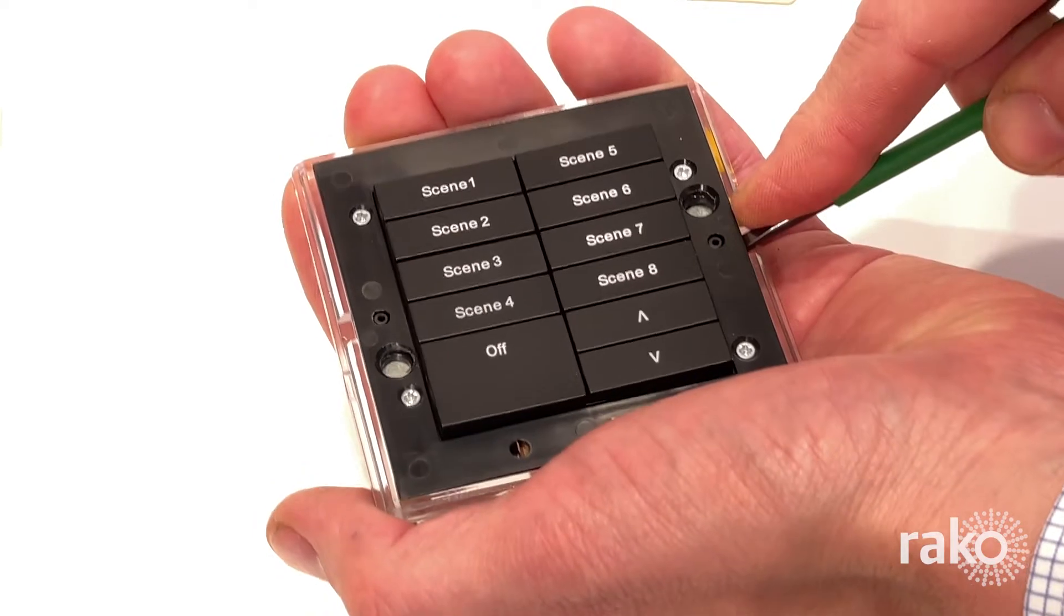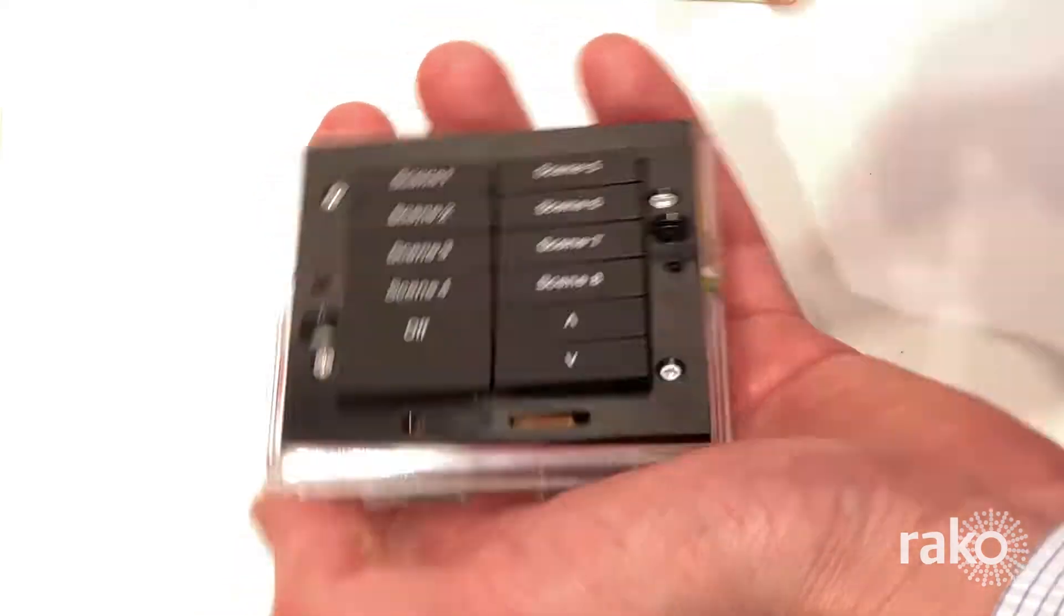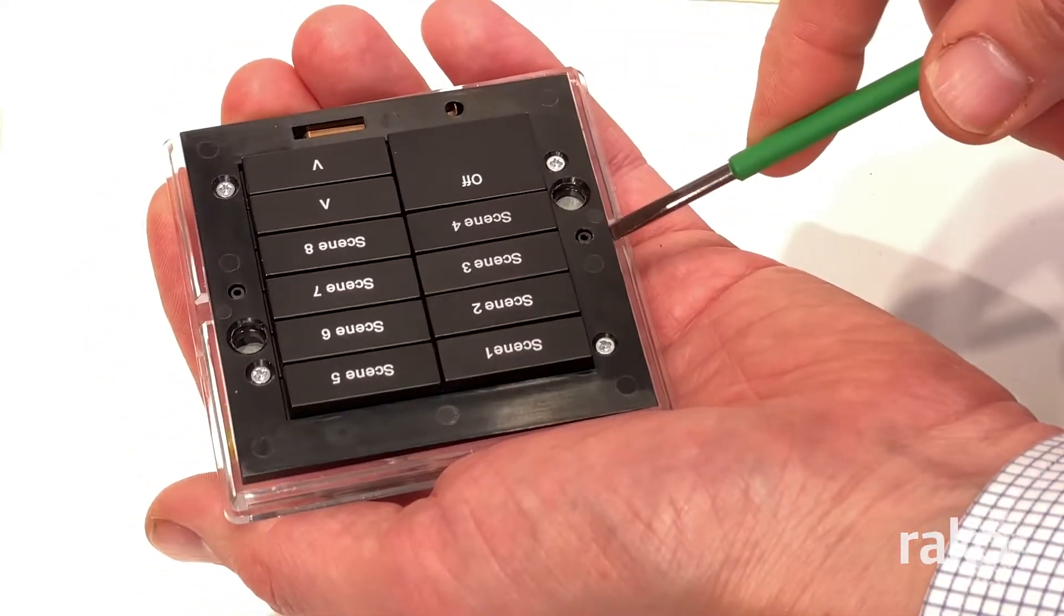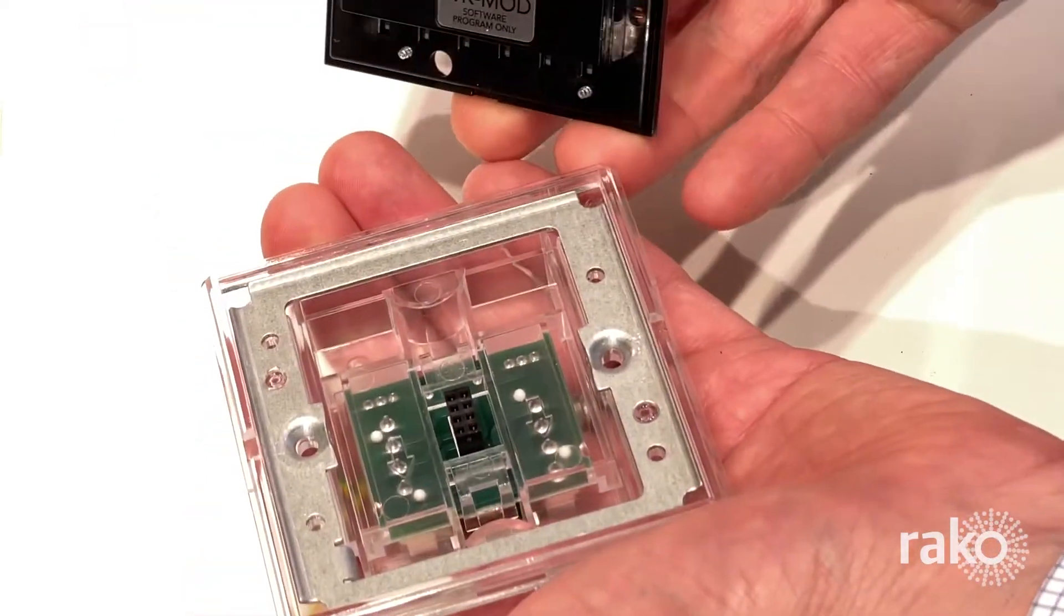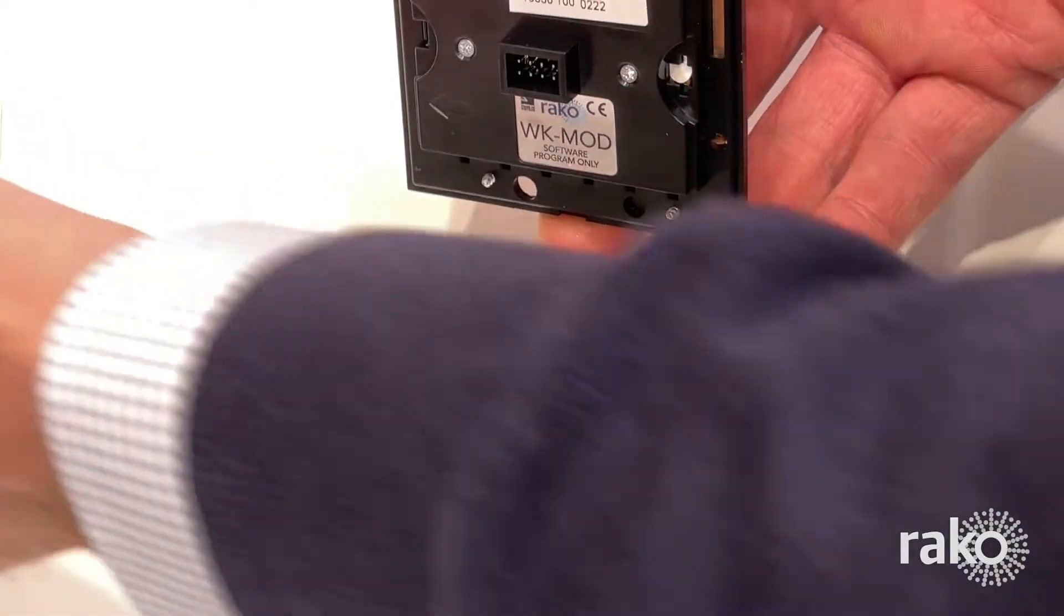To take the front off the keypad, gently insert a flat bladed screwdriver into the slots at the side, push it down about 45 degrees and try not to twist it as this could lead to distortion or damage of the plastic. Once loosened it should come apart easily.